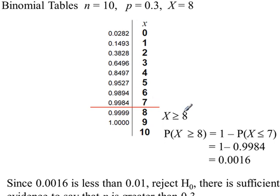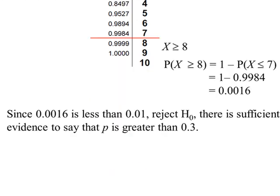P(x ≥ 8) is 1 minus P(x ≤ 7). The probability here is less than 0.01, the significance level. And because it's less, we reject H0 and state there is sufficient evidence to say that p is greater than 0.3.